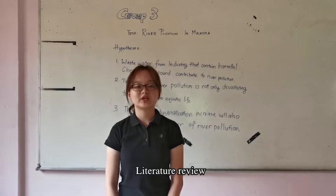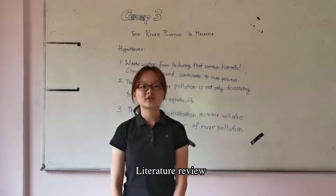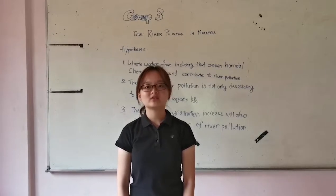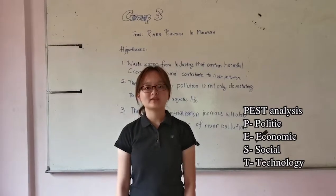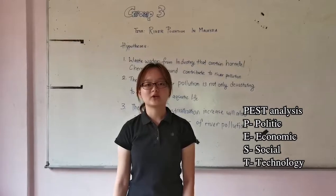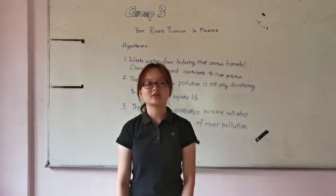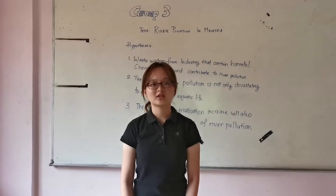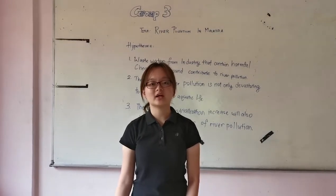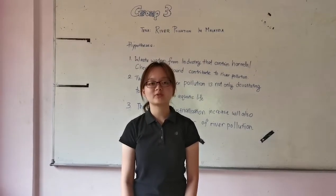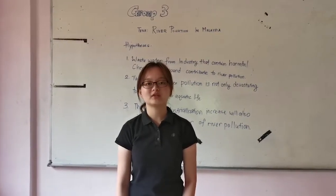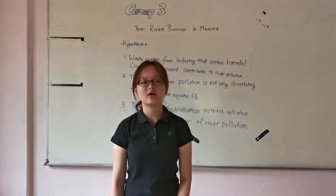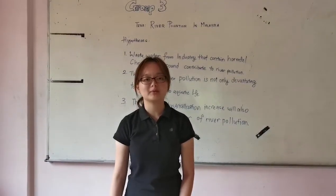Let's proceed to the literature review. Literature review is done based on past analysis. The past analysis covers key political, economic, key social and technological factors. The first aspect is political. The 2017 environmental policy indicates that the policy on river pollution has been noted since the 18th century. The environmental policy in 1974 is there but was not prevented effectively.